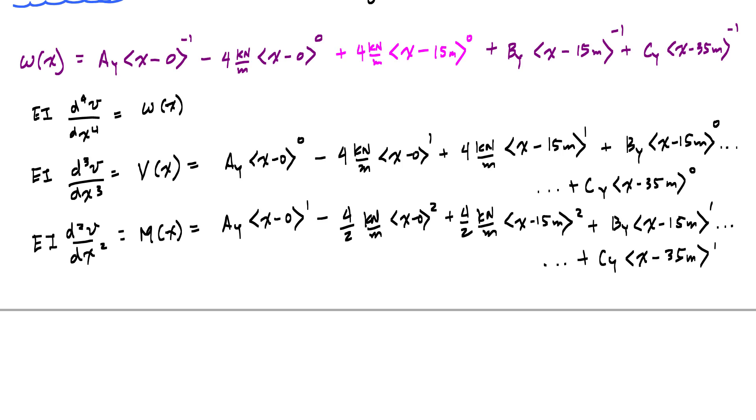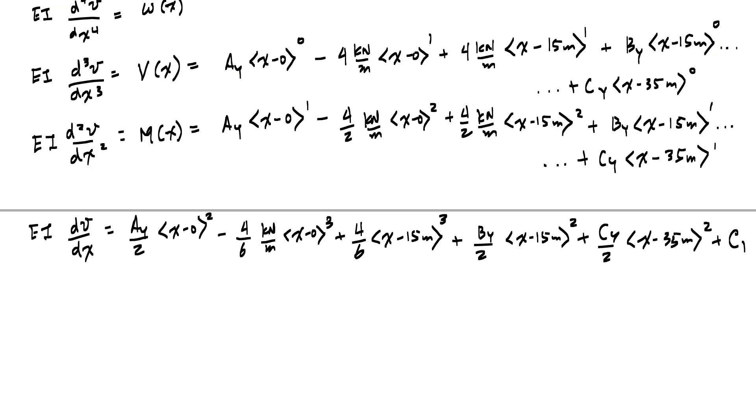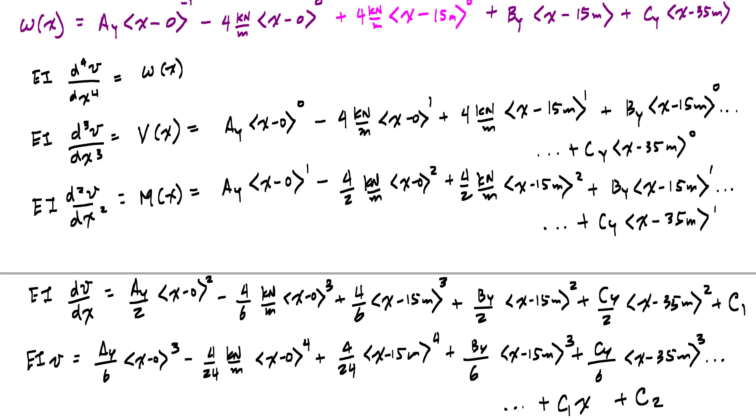Now I take another antiderivative and this will give me the slope function dv/dx. And this is where we would need the constants of integration would appear. Next one right here, we write EIv. This would be the displacement function. It's just, you know, it's just very tedious, right? These are all the functions.